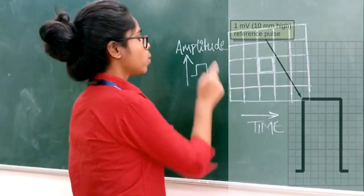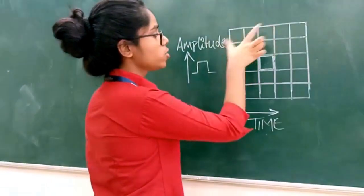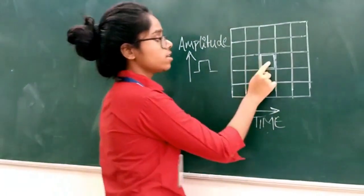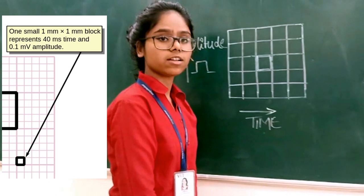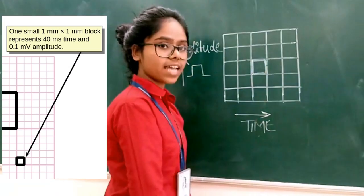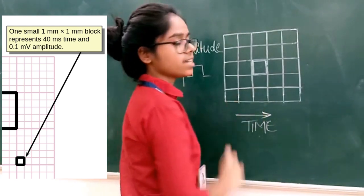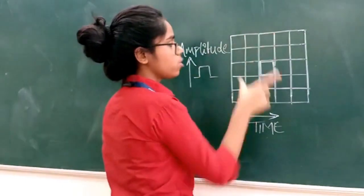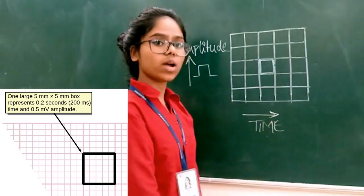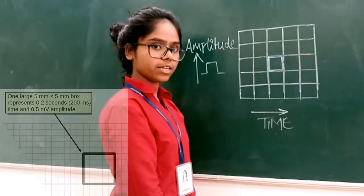It starts with 1 mV pulse calibration. You can see the big block and 25 small blocks in it. The small block is 1 mm by 1 mm, where 0.04 seconds is the time and 0.1 mV is the amplitude. The big block is 0.2 seconds, that is 200 ms, and 0.5 mV.